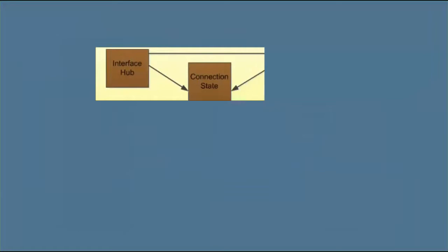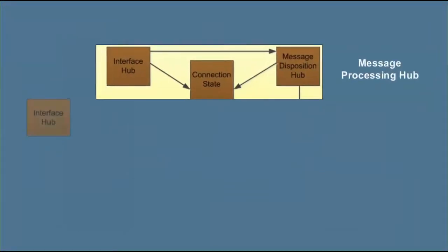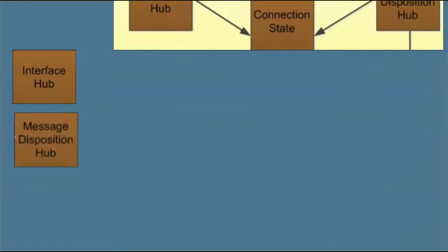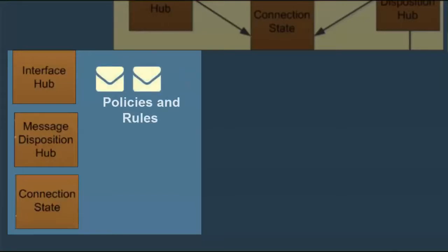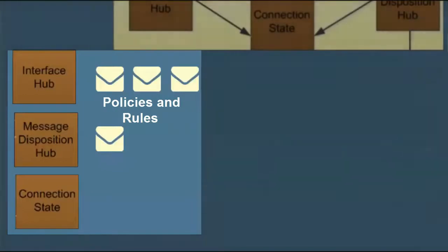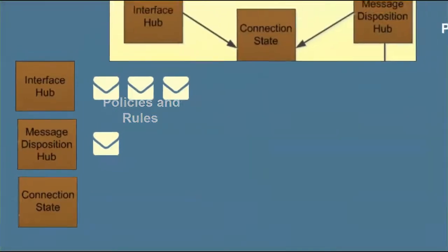Messages are routed to the Message Processing Hub, which consists of the following components: the Interface Hub, the Message Disposition Hub, and Current Message Connection State. The Interface Hub holds messages for processing while policies and rules make decisions regarding message disposition. The Current Message Connection State is updated by the various modules, and messages that have a disposition move to the Message Disposition Hub for final disposition according to the configured policies and rules.